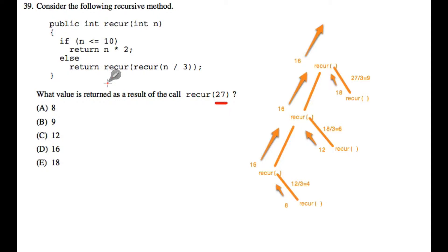So we're asked to say what a call to this method recur with 27 would return. Our stopping condition is n is less than or equal to 10, and then in that case we return n times 2.